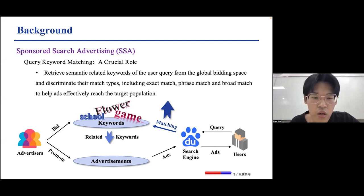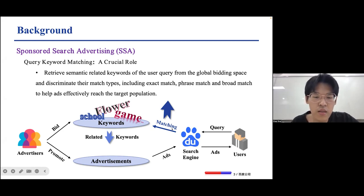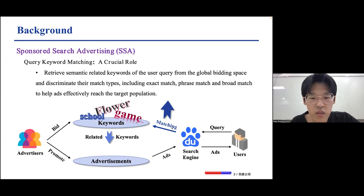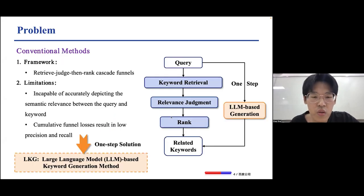Query-keyword matching plays a crucial role in SSA by retrieving semantically related keywords of the user query from the global bidding space and discriminating their match types, including exact match, phrase match, and broad match, to help reach the target population.